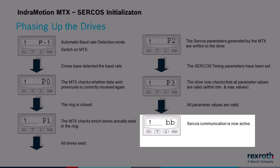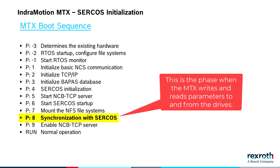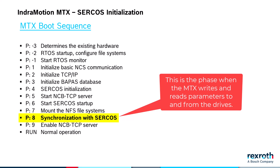Now, CIRCOS communication between the MTX and the drives is active. Here is the boot sequence for the MTX. Phase P8 is when the control loads and reads parameters to and from the drives. The MTX will remain in this phase until either all the drives have reached P4, or the timeout value has been reached.